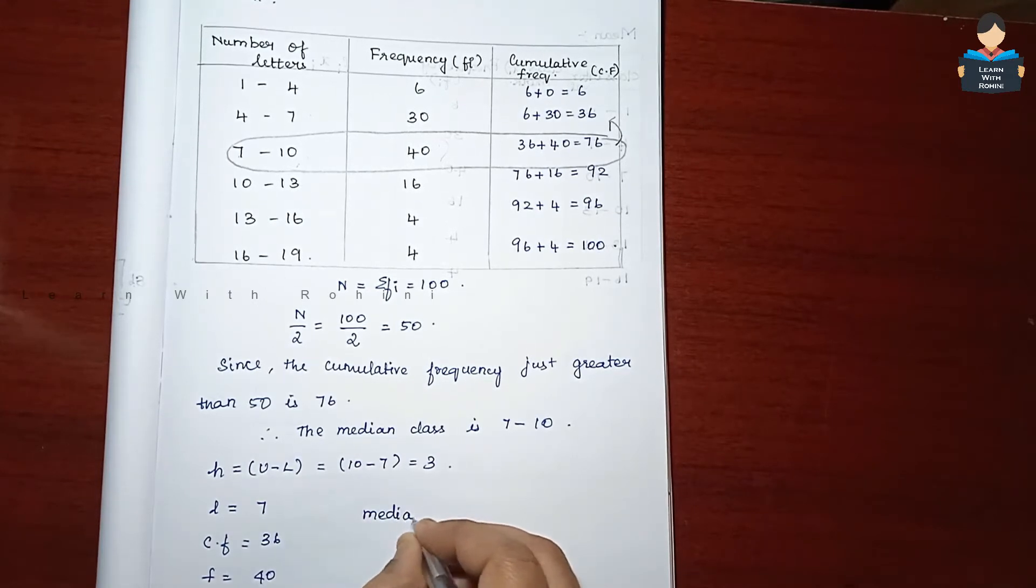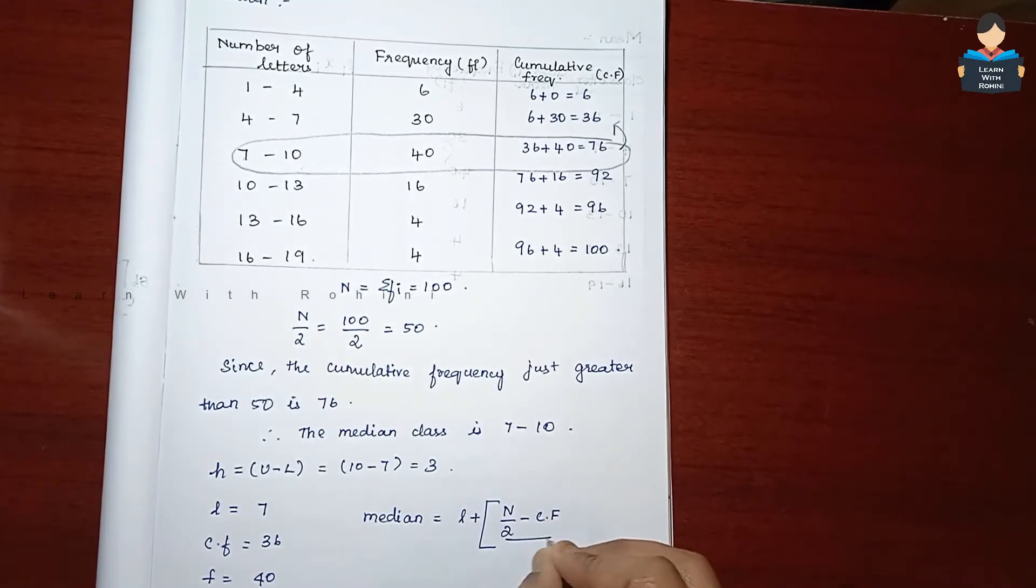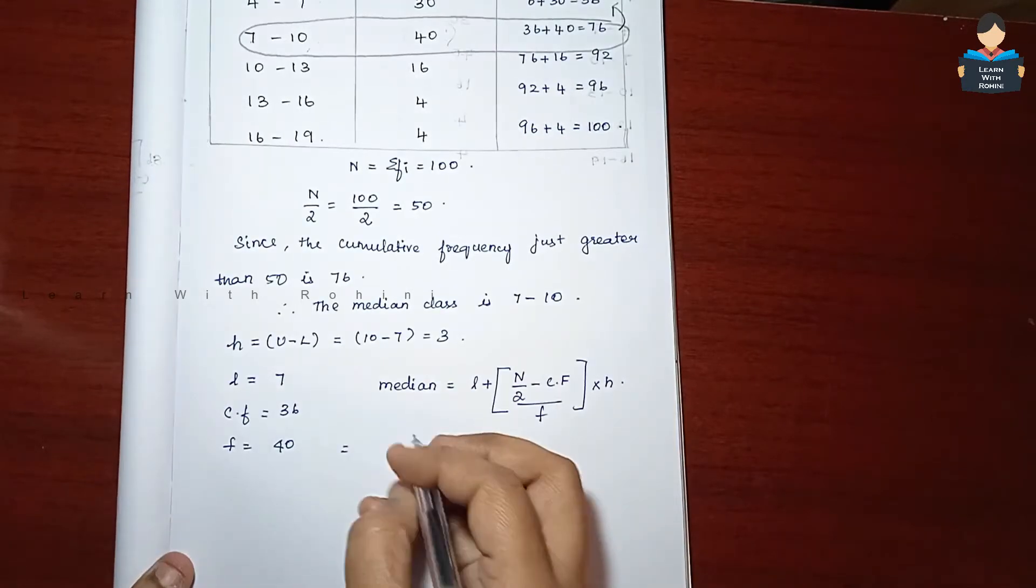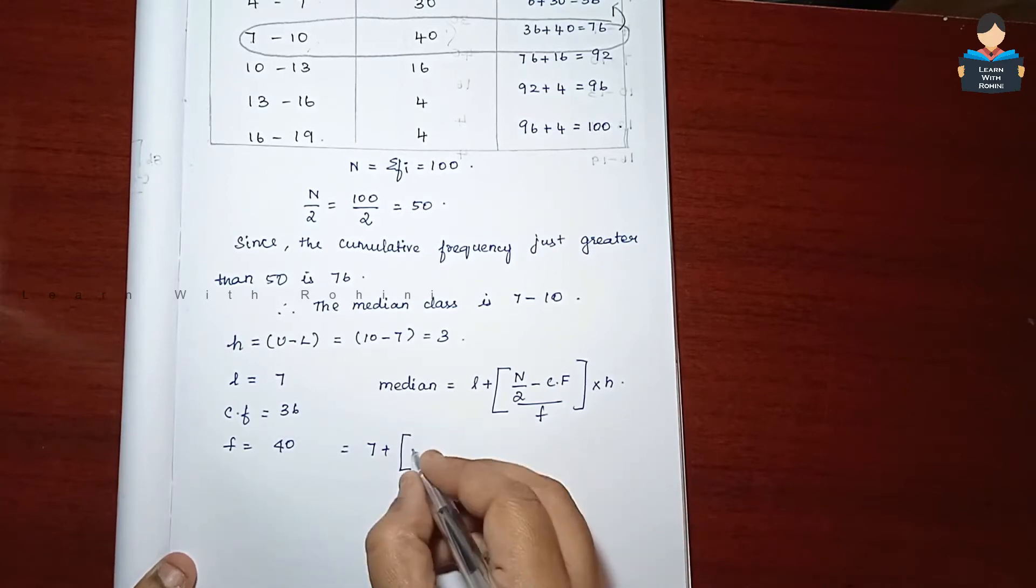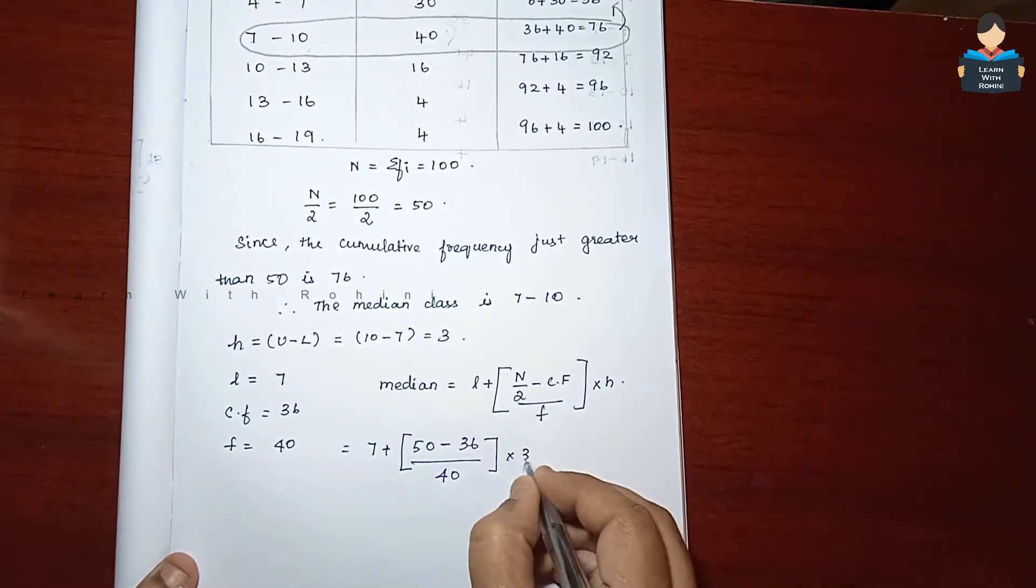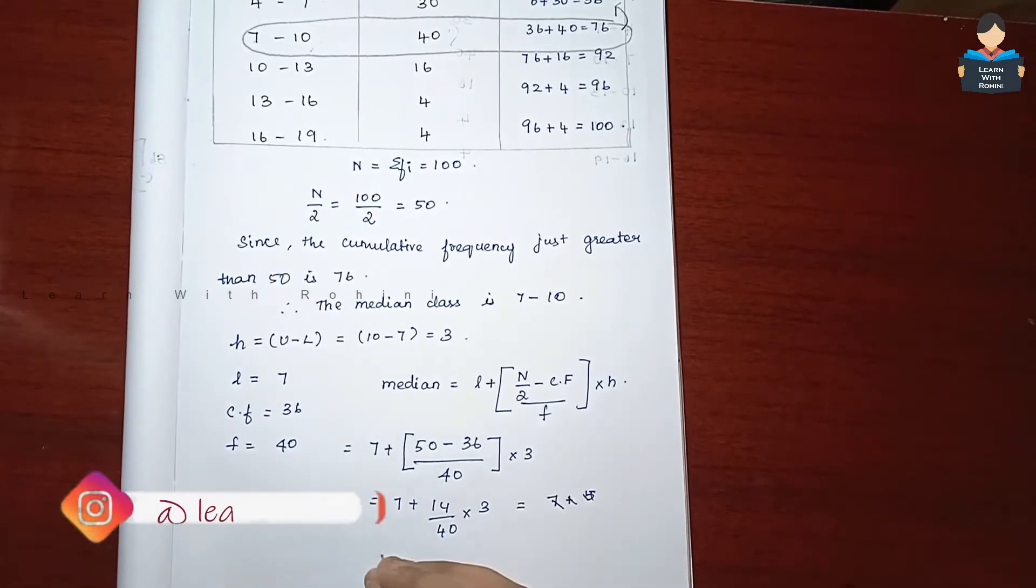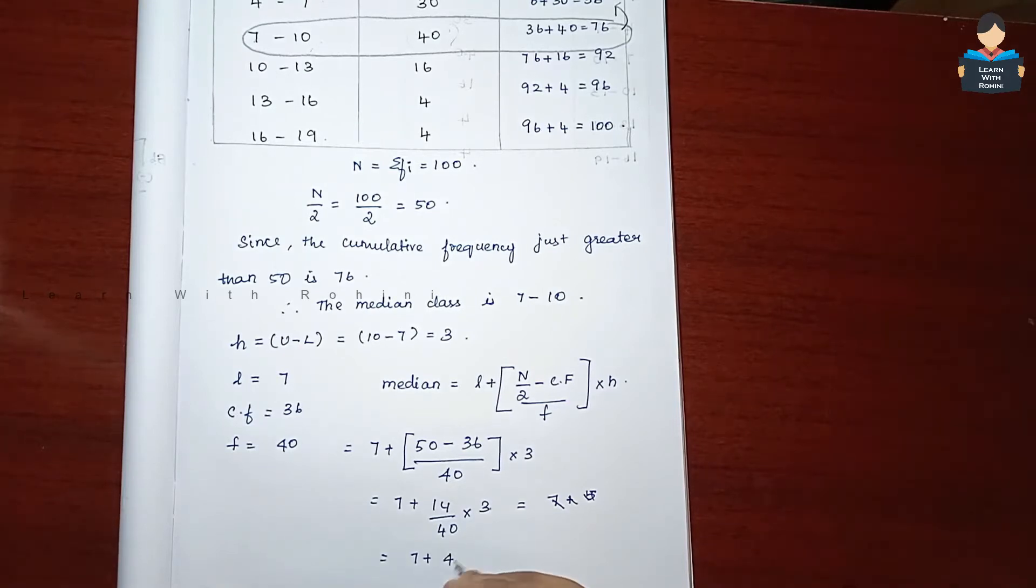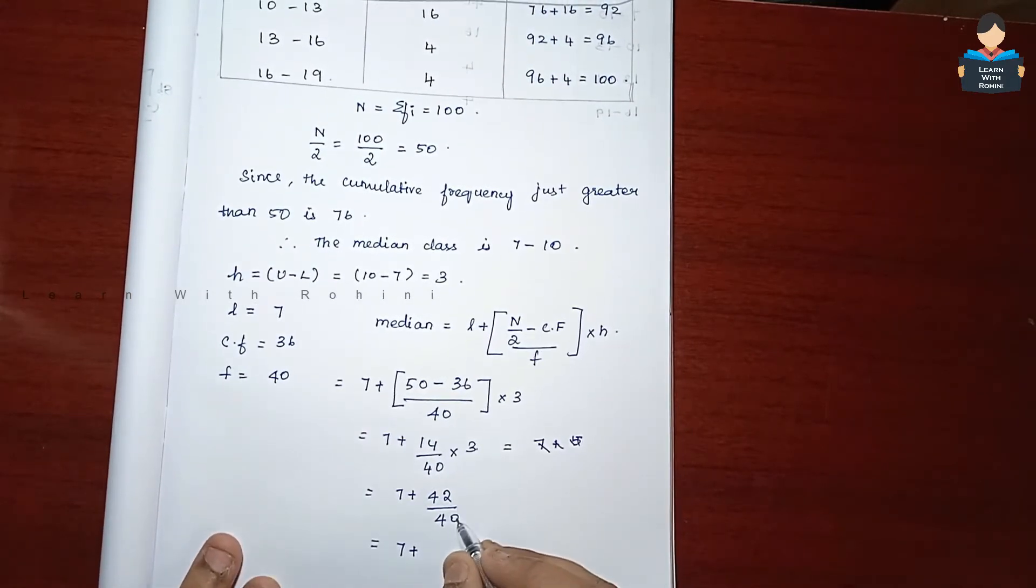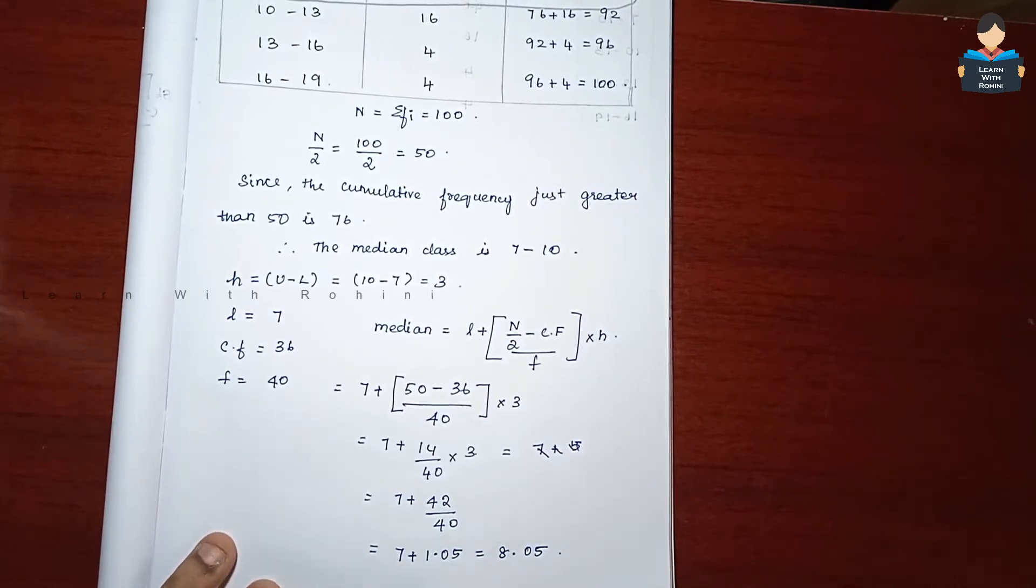Median equals L plus n by 2 minus CF by F into H, which is 7 plus 50 minus 36 by 40 into 3. So 7 plus 14 by 40 into 3, which equals 7 plus 42 divided by 40, which equals 1.05. So 8.05. The median equals 8.05.